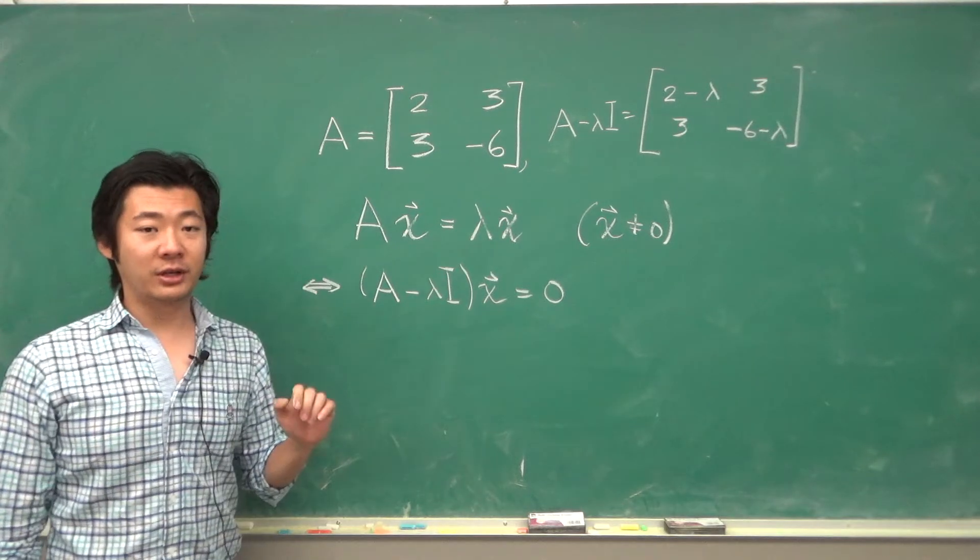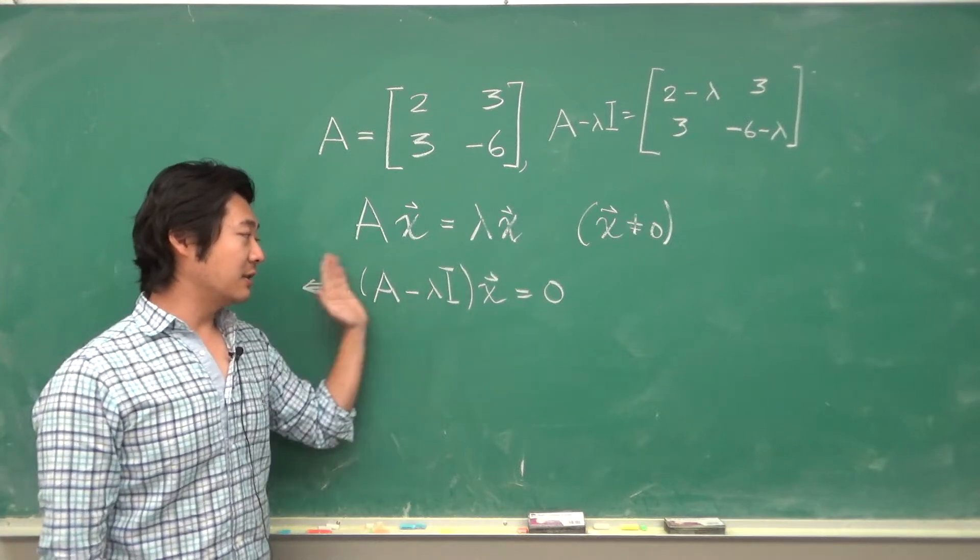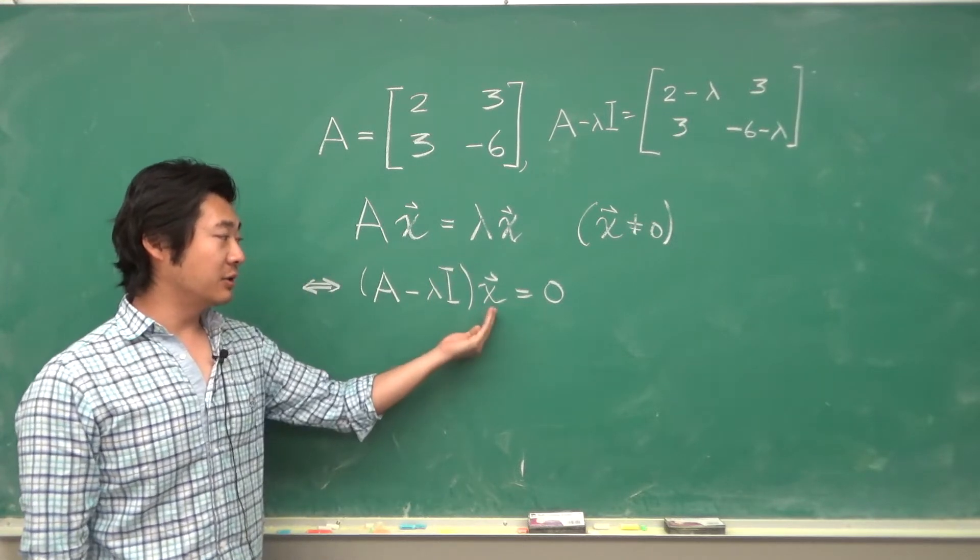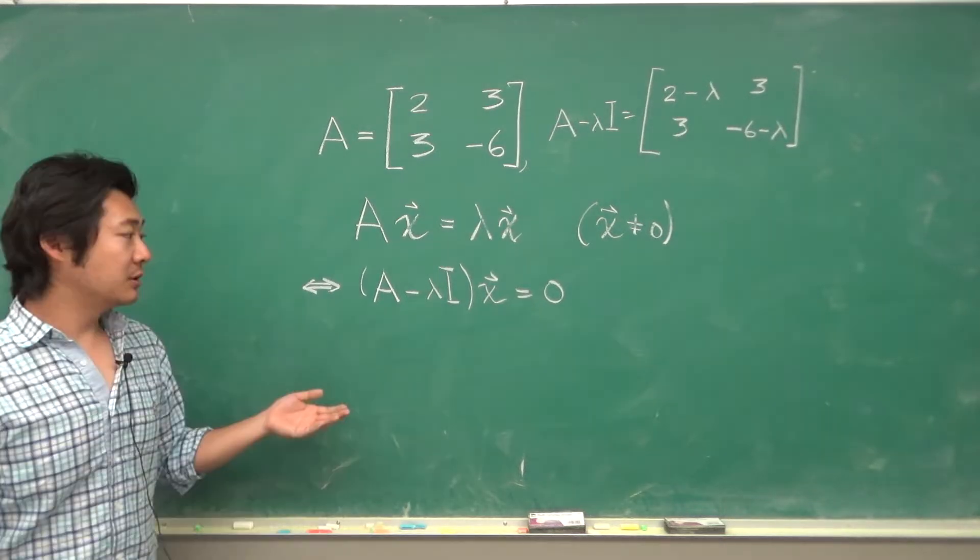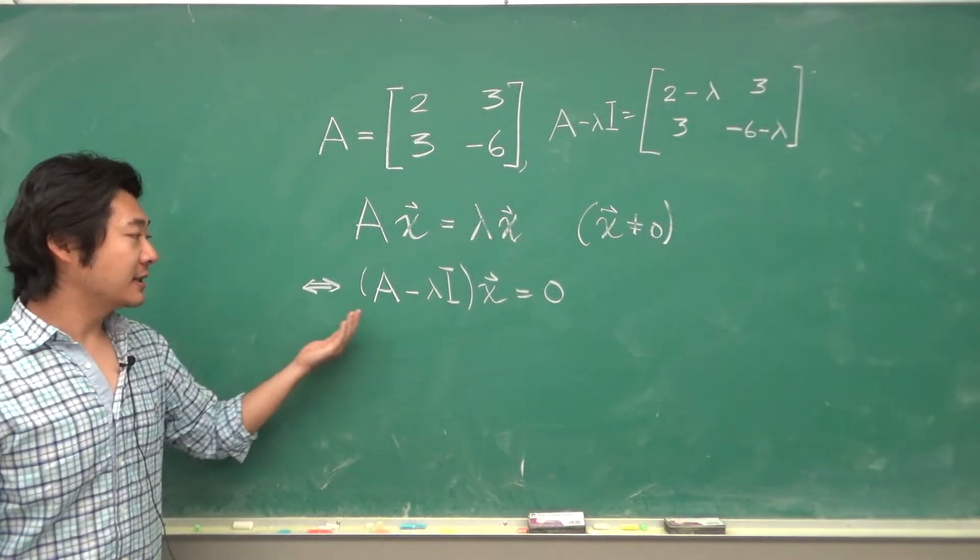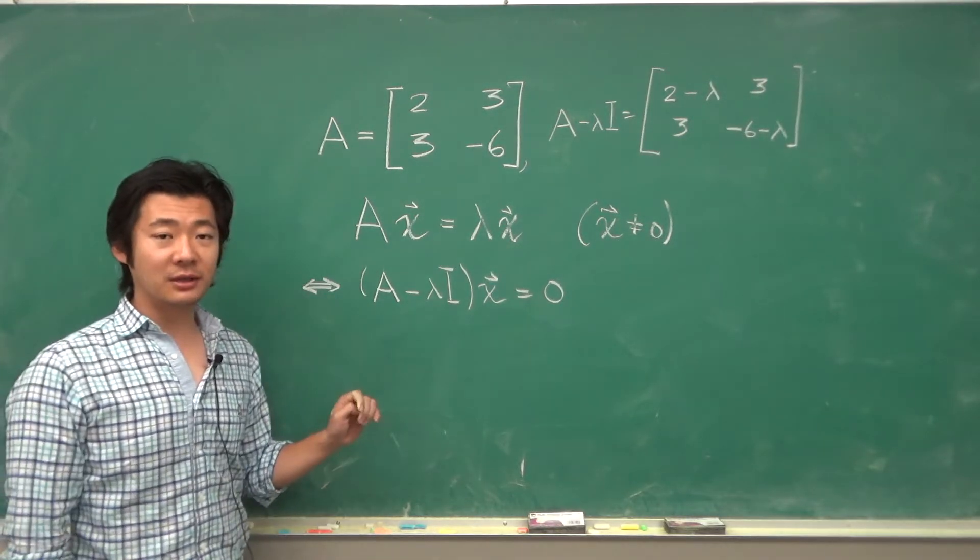Namely if you recall one of the invertible matrix theorems, if this matrix is invertible then the only solution to this homogeneous equation is just x equals 0. So you want to make sure that A minus lambda I is not invertible. So when is something not invertible?